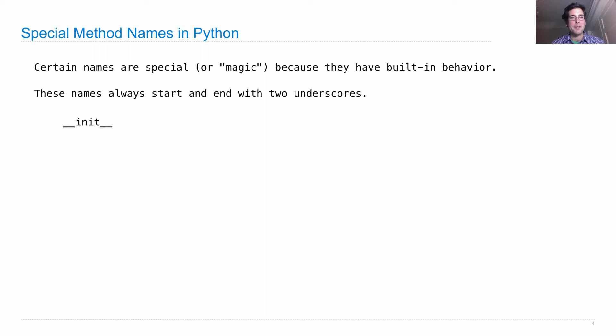The first example we saw of this was __init__, which is the name of every constructor method. It's special because it's invoked automatically when an object is constructed. There are many more of these.